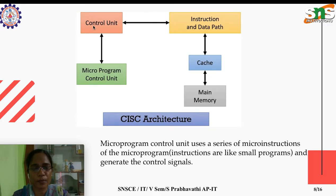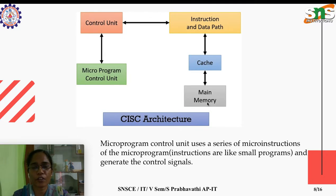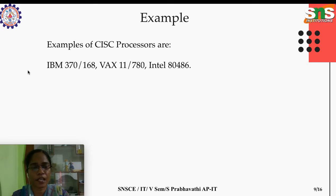Information can be fetched from either memory or cache. Some examples of CISC architecture processors are IBM 370/168, VAX 11/780, and Intel 80486. These processors use complex instruction sets.